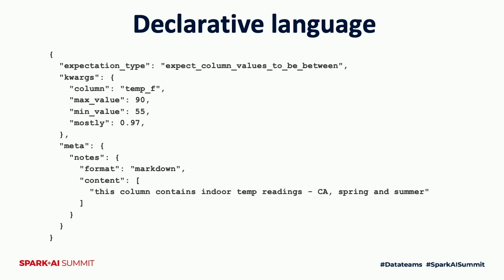You can express an expectation using the declarative language of Great Expectations. The expectation type is `expect_column_values_to_be_between`. It applies to column `tempF`, with a maximum expected value of 90 and a minimum of 55. The `mostly` argument — set to 0.97 — implements fuzzy logic: even if up to 3% of values are non-compliant, you won't fail the whole column. You can also add a note for context, for example: 'This column contains indoor temperature readings taken in California during spring and summer.'